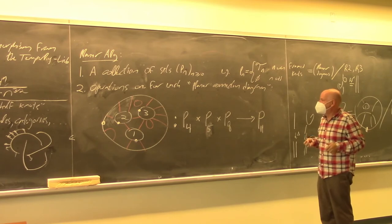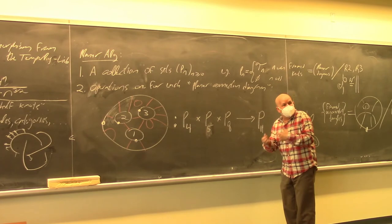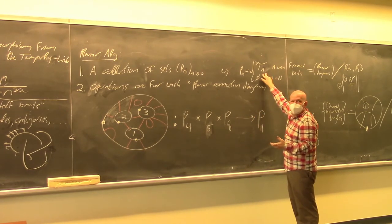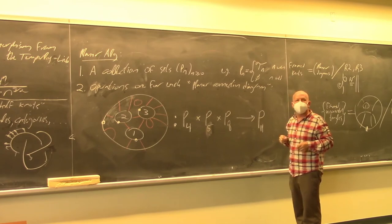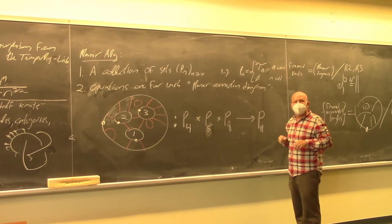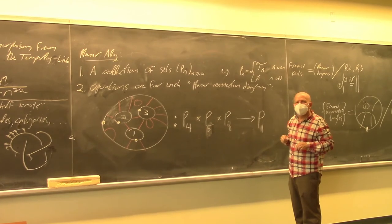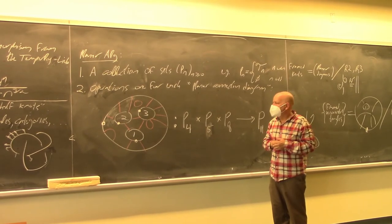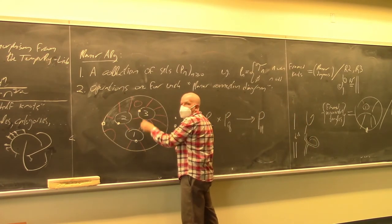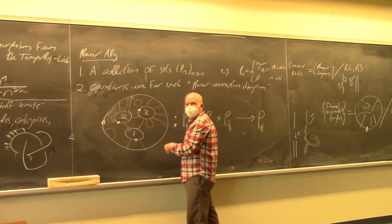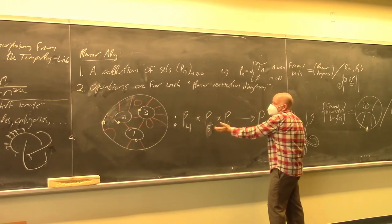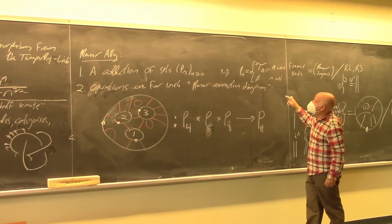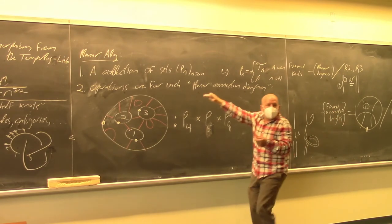Now, how do these operations work in the case of tangles? It's kind of obvious. If you have three input tangles — one with four ends, one with five ends, one with eight ends — you take the first one and put it in the first hole, the second in the second hole, the third in the third hole. This gives a bigger tangle altogether. That was the composition of three smaller tangles into a big one.